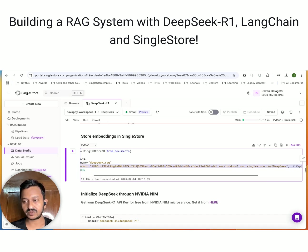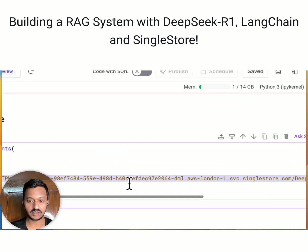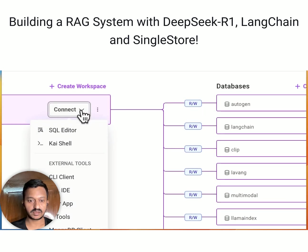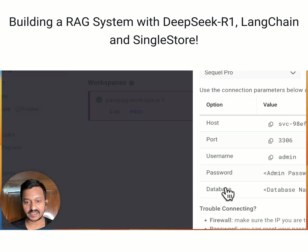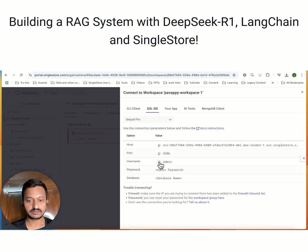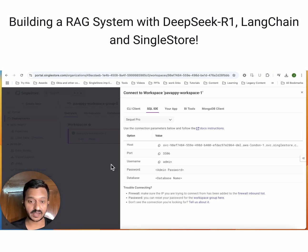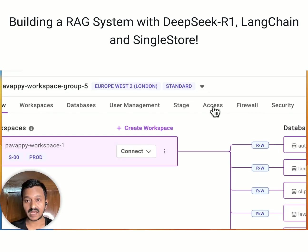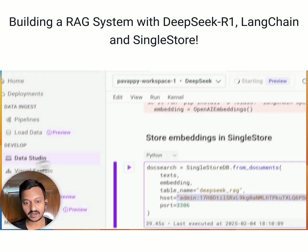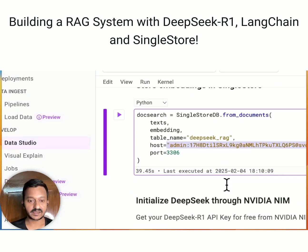Go to Deployments, then your workspace, then Connect, then SQL IDE. That's where you can see your host and port. The username is admin and you can get your password from there as well. So once you set that up, you initialize DeepSeek via NVIDIA NIM.